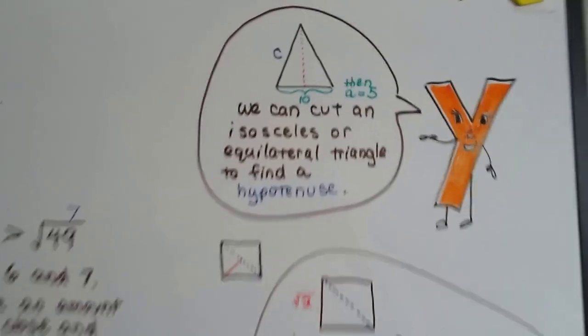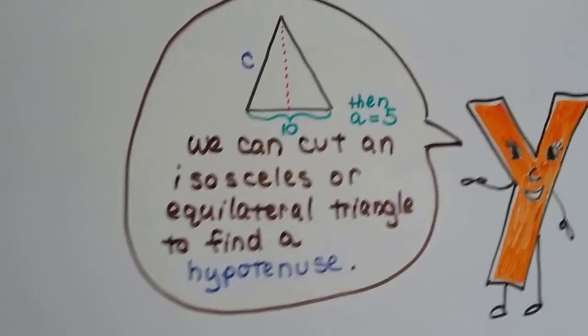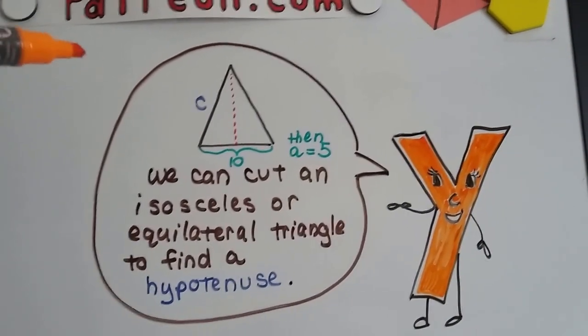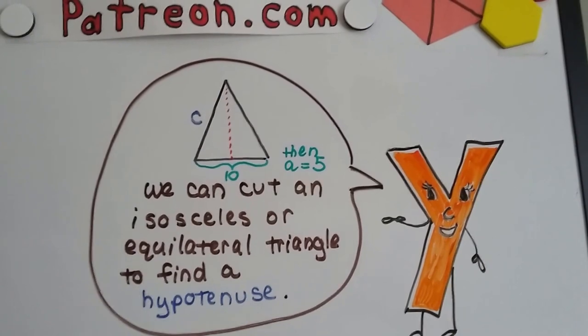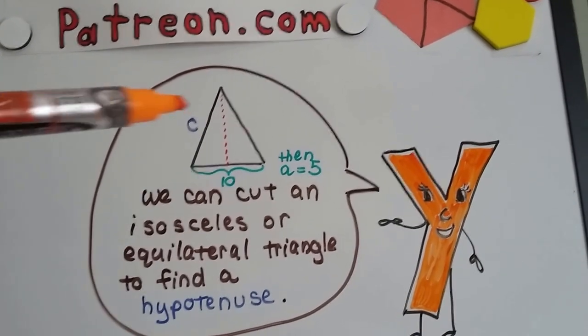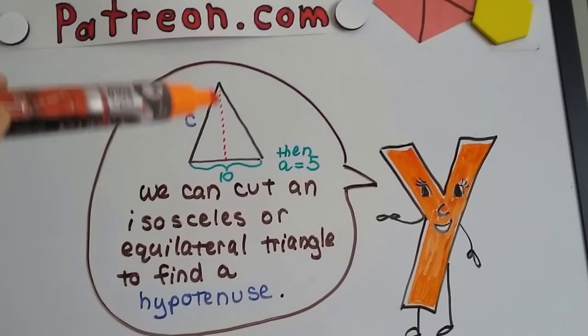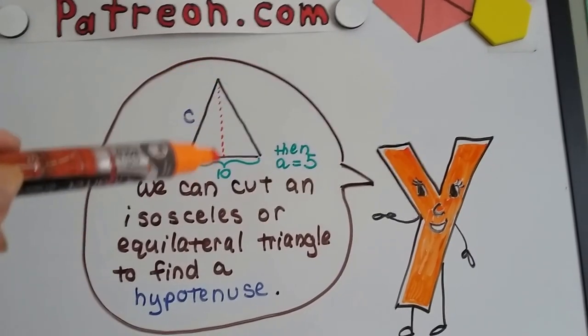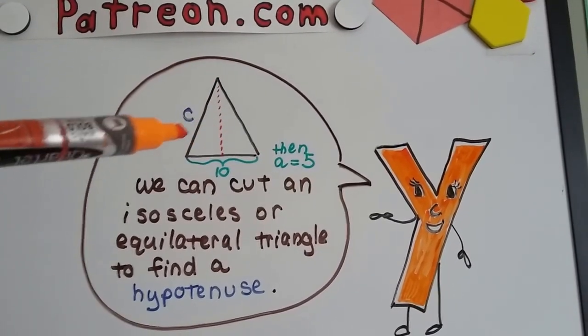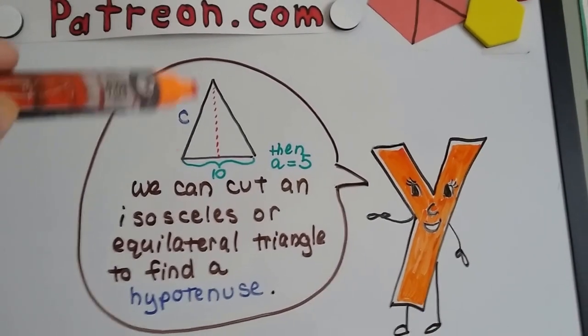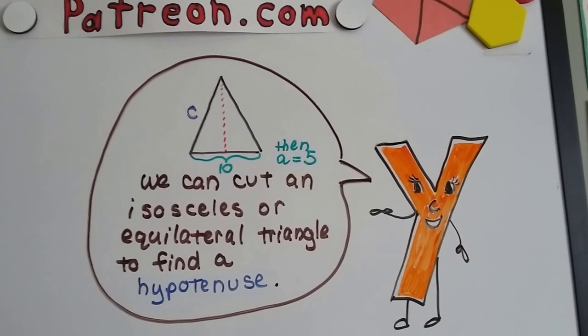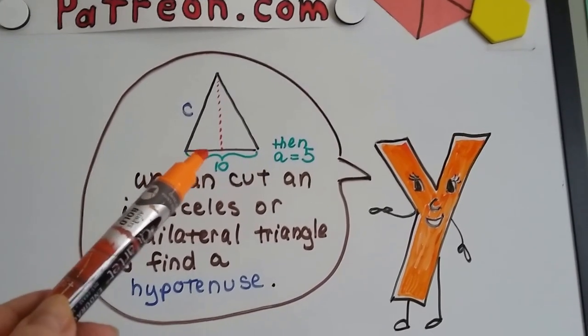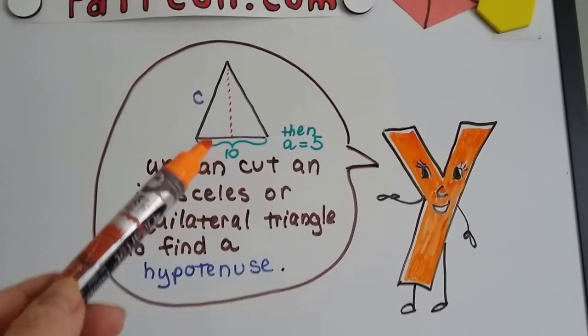And we can cut an isosceles or equilateral triangle in half. We can divide it in half to find a hypotenuse. So if you have an isosceles or equilateral triangle and it says find the hypotenuse, just put a division line, splitting it right down the middle here so it's symmetrical on each side, and now this side ends up becoming the hypotenuse, right? And if it says the base is a 10, well, then this leg would be a 5 because it's only half of it, right?